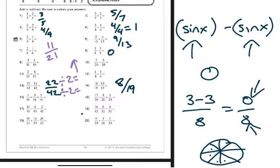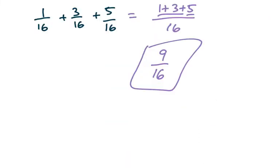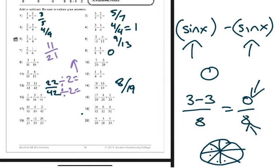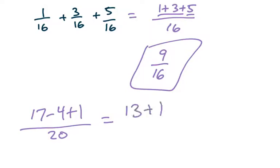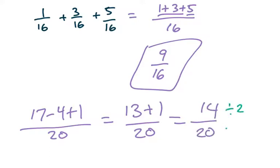Number sixteen: seventeen over twenty, four over twenty, and one over twenty. It's going to be seventeen minus four plus one over twenty. Seventeen minus four is thirteen, thirteen plus one over twenty is fourteen over twenty. Both are divisible by two, giving seven over ten.